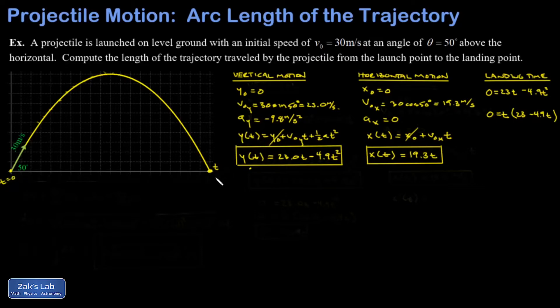And then I get the non-trivial one by setting 23 minus 4.9 t equal to zero, and then I solve for t. When I do that, I get 4.69 seconds for the time.